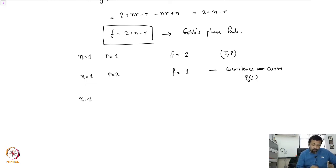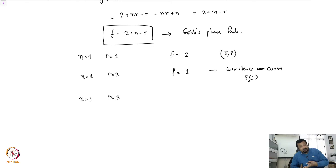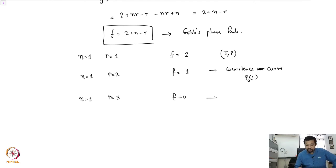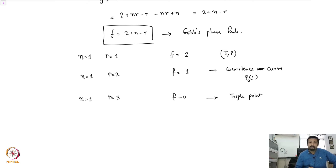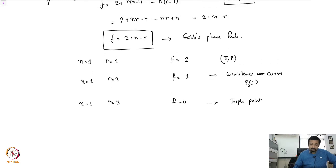If N = 1 and R = 3 — a single component existing in three phases such as solid, liquid, and gas — then F = 0. You have no freedom at all. In the thermodynamic phase diagram (P-T diagram), this represents a single point, which is the triple point for a hydrostatic system. With this, we conclude this lecture. Thank you.